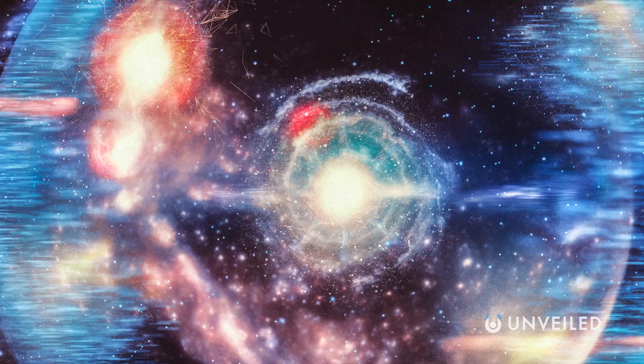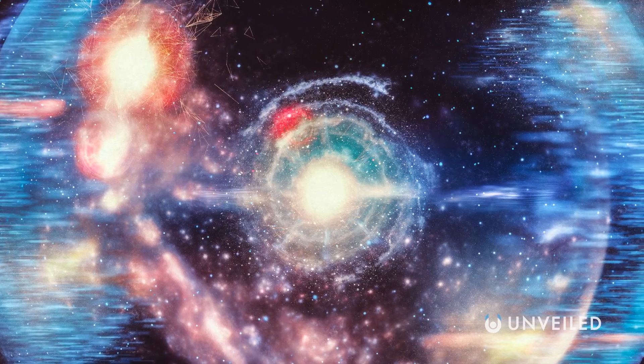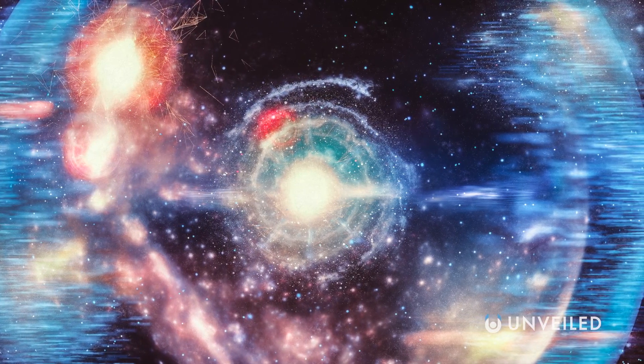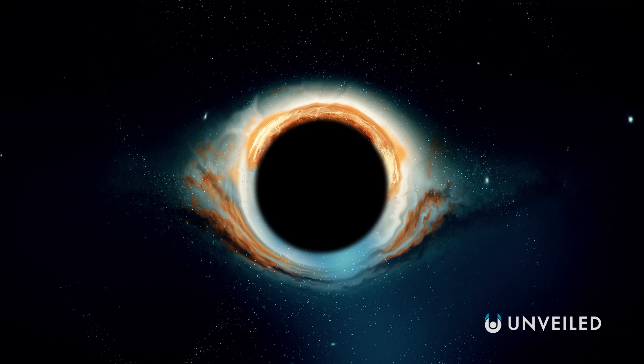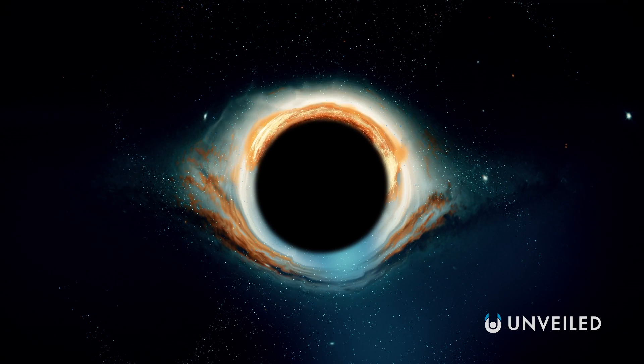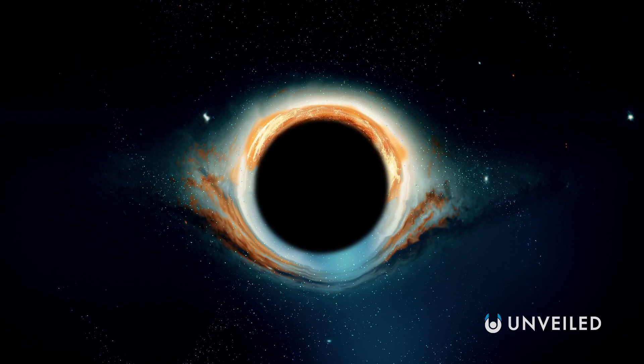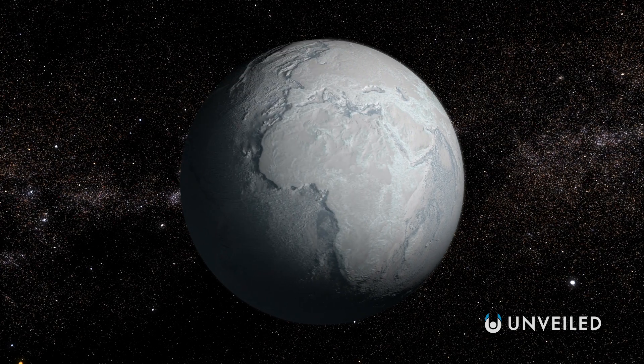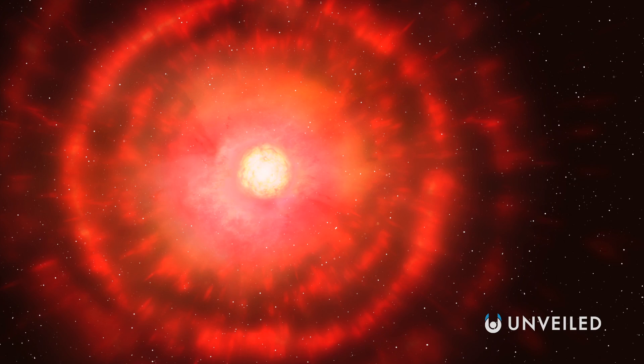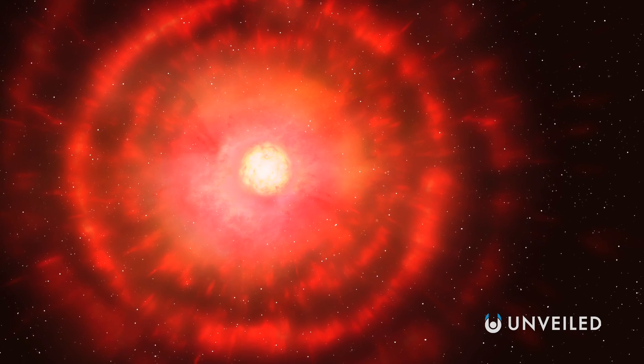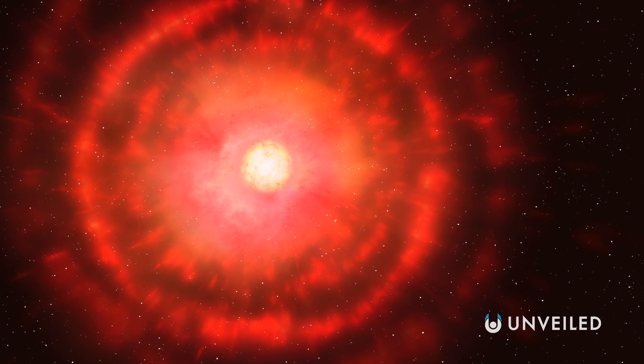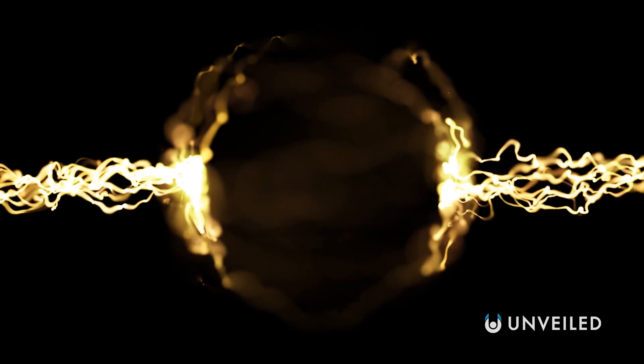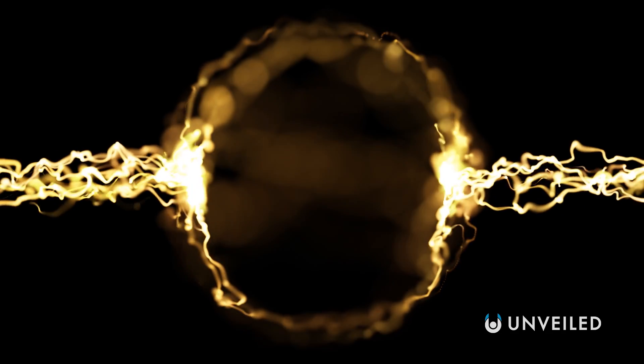The Big Rip theory says that eventually it'll get so full of dark energy that it'll literally burst at the seams and be torn to pieces. The Big Crunch says it'll someday collapse in on itself to form another immense singularity, like the one thought to have caused the Big Bang. And there are other ideas too, including the Big Chill or Heat Death, but none truly account for the beginning of everything there is. The universe can't have just appeared out of nowhere because of the first law of thermodynamics, which says that energy cannot be created or destroyed.